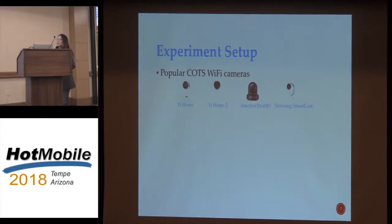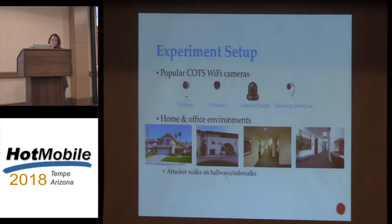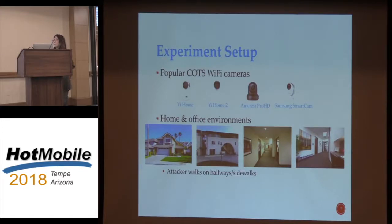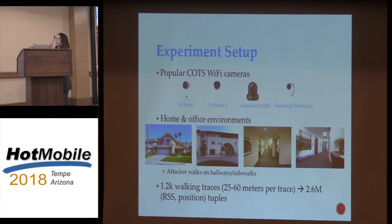In our experiment, we tested four popular Wi-Fi cameras: eHome, eHome2, iMacRest Pro HD, and SantaSmart. We placed these devices in rooms of a residential house, a student apartment, and two different office buildings. We allowed the attacker to walk on sidewalks or hallways, and asked three different people to perform the measurements. In total, we have 1,200 walking traces with more than 2.6 million RSS and position samples.